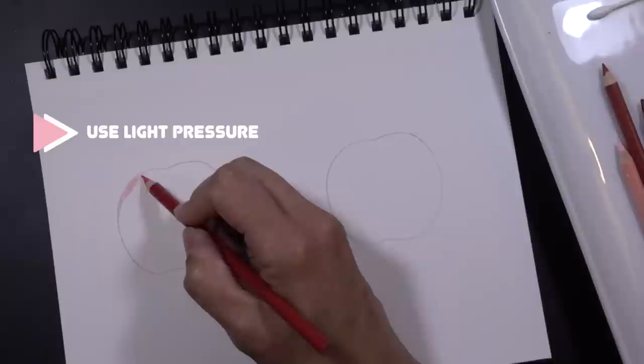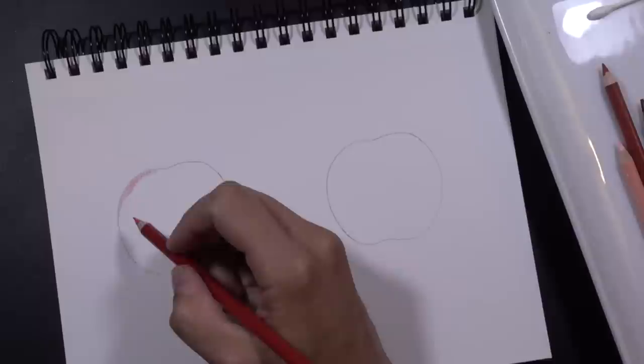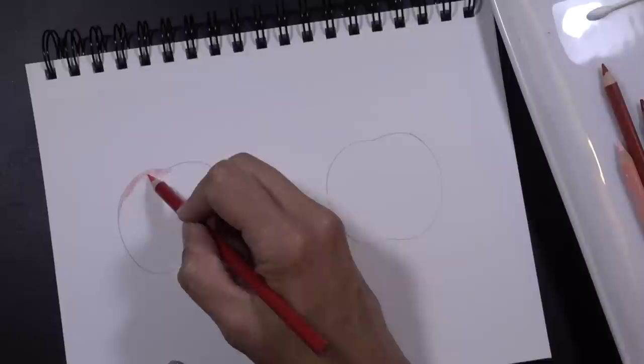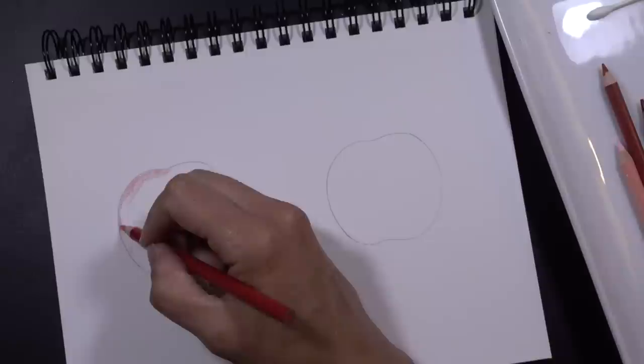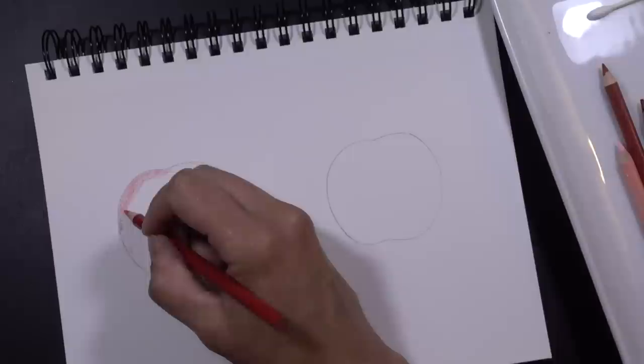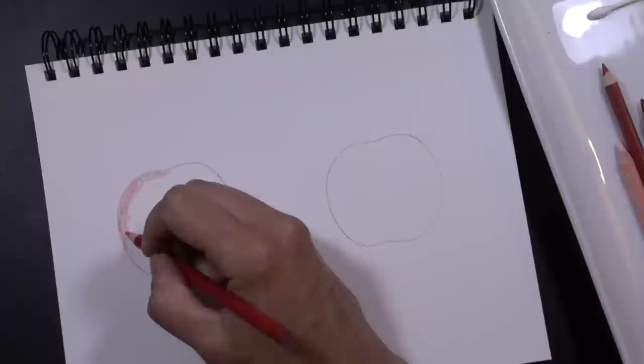So the first thing that you want to know about layering and get really accustomed to doing is using very light pressure. Now layering colored pencil is all about multiple layers of really thin levels or coats. Think of it like those crepe cakes. Really super thin layers stacked right over top of each other makes for a really stable, rich outcome. Same thing with pencils.